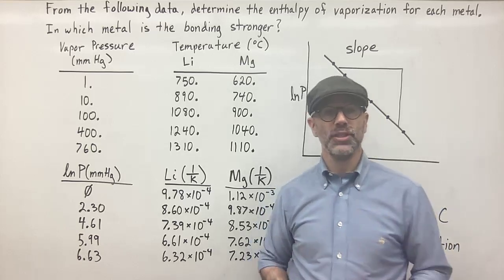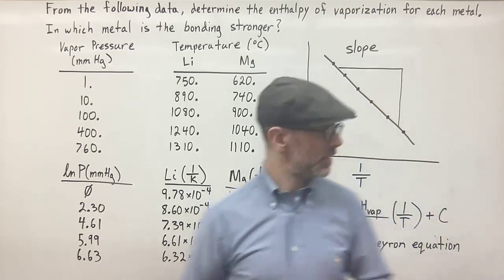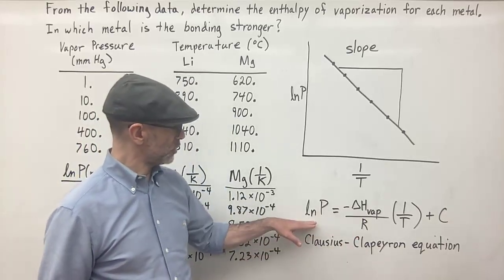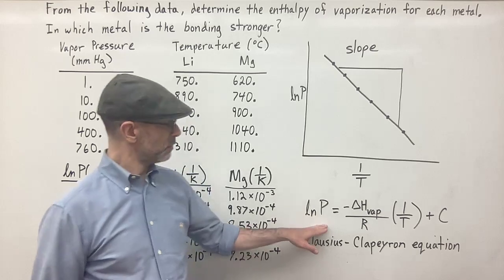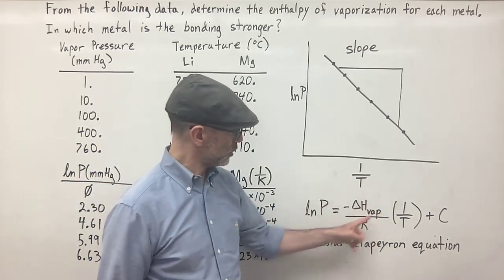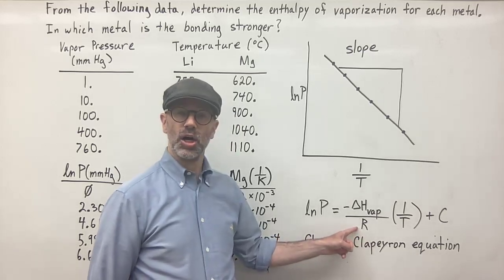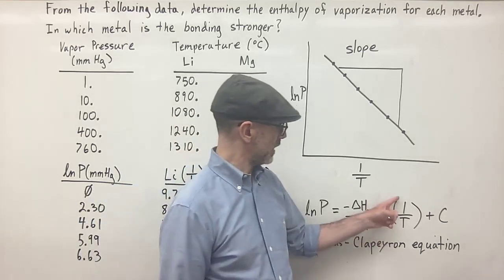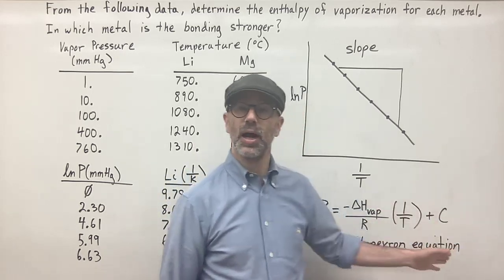This is where you're going to need to use the Clausius-Clapeyron equation. The Clausius-Clapeyron equation is the natural log of the pressure equal to the negative of the enthalpy of vaporization over the ideal gas constant R, multiplied by 1 over the temperature, plus some constant.